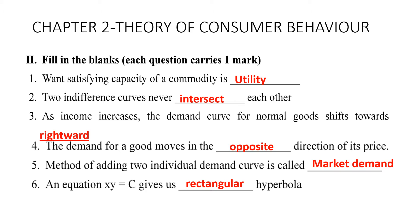Chapter two: theory of consumer behavior. Question one: the satisfying capacity of a commodity is called utility. Question two: indifference curves never intersect each other — two indifference curves do not pass through one another.